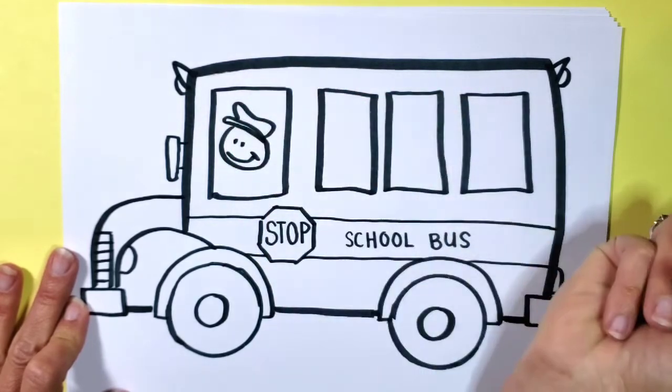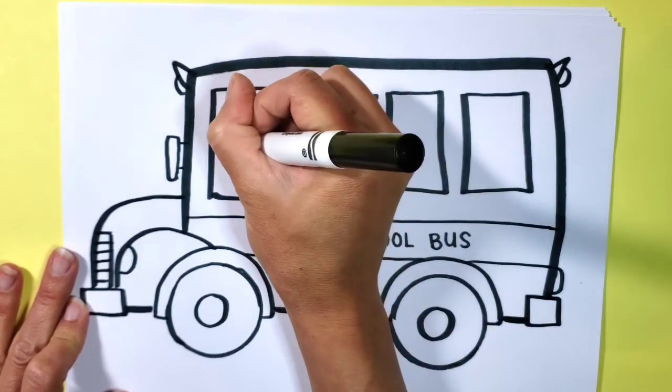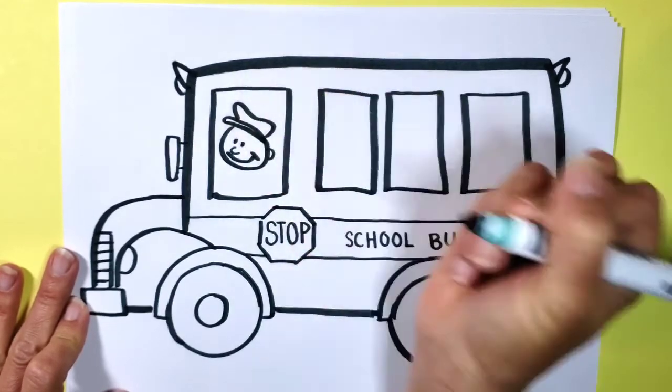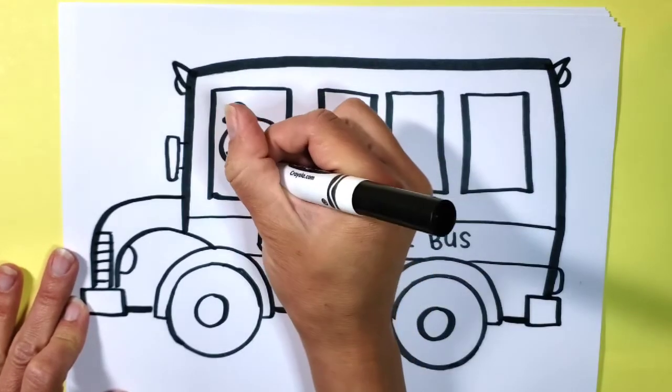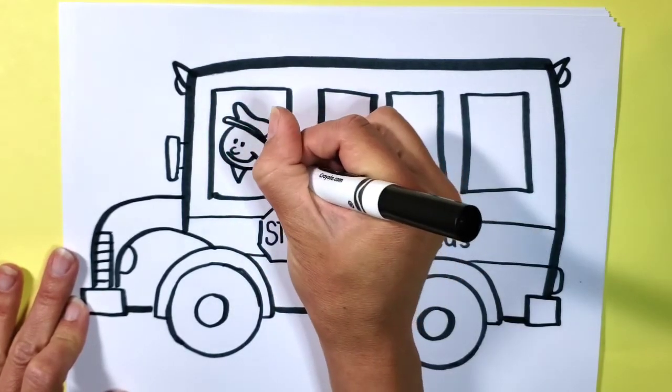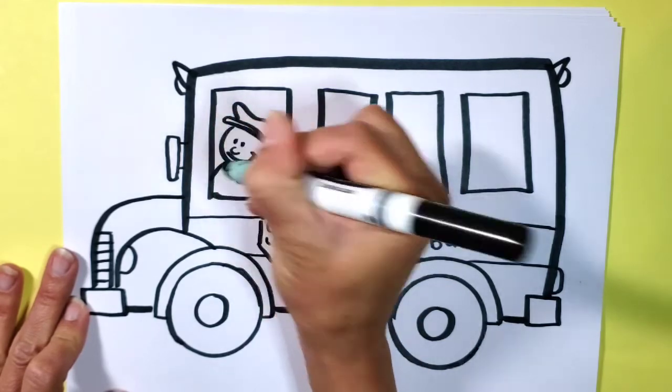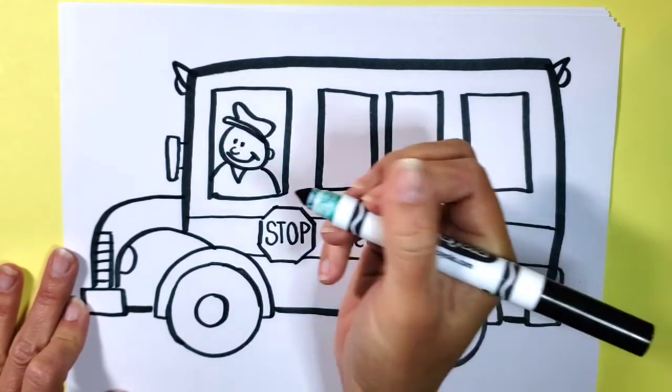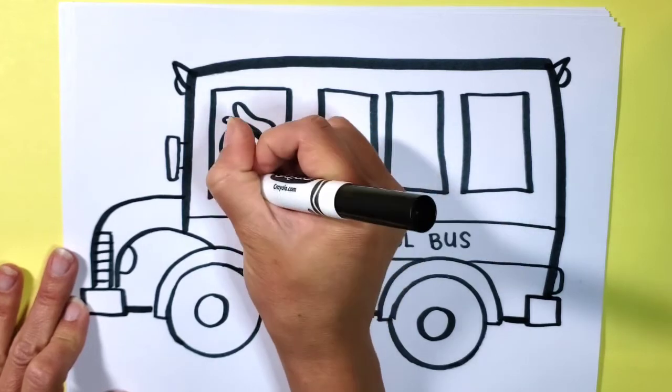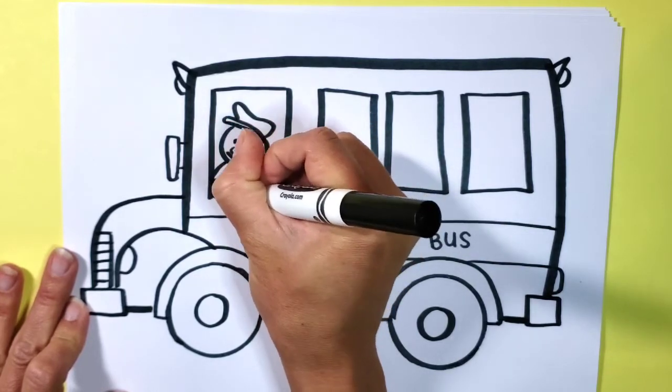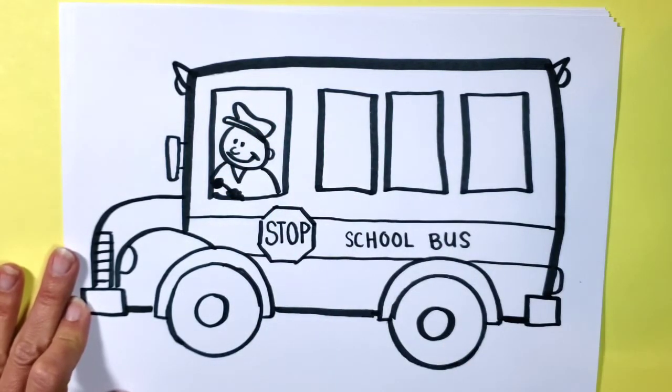Then he can have a little uniform on here and of course the steering wheel. You can put his hands on the steering wheel because he's driving the bus.